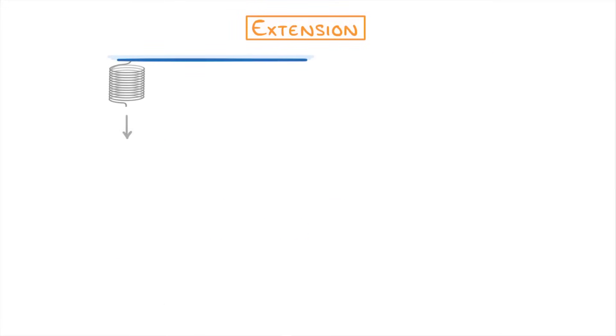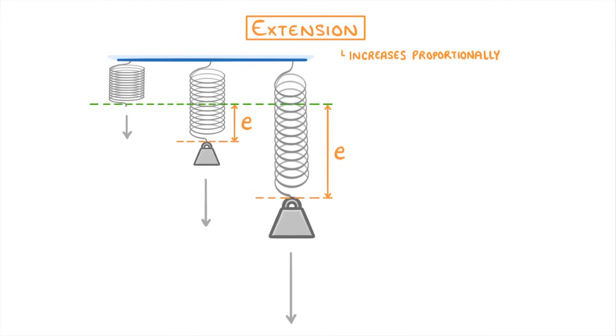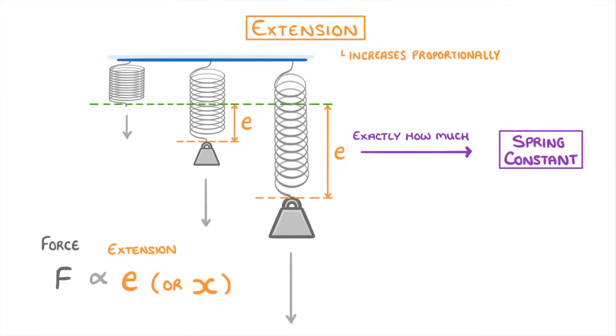As we increase the force on the spring, for example we add more mass, the extension increases proportionally, which we can write as F is proportional to E, because F is the force and E is the symbol for extension, although you might sometimes see it represented as an X instead. Exactly how much the spring extends though, for a given force, depends on the particular object's spring constant, which is denoted by letter K.